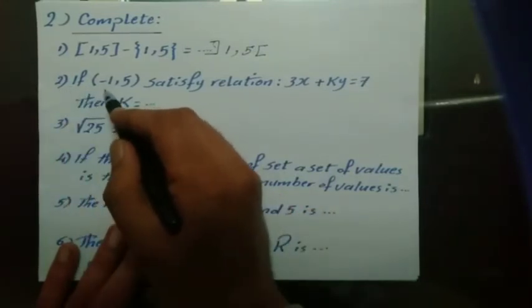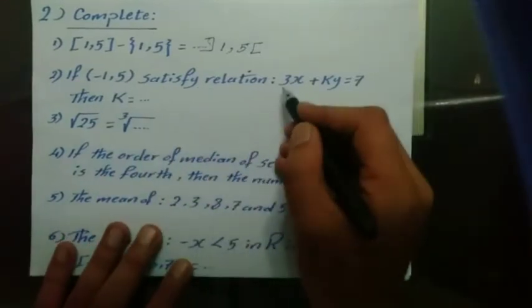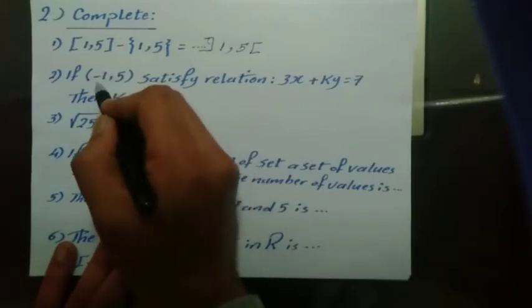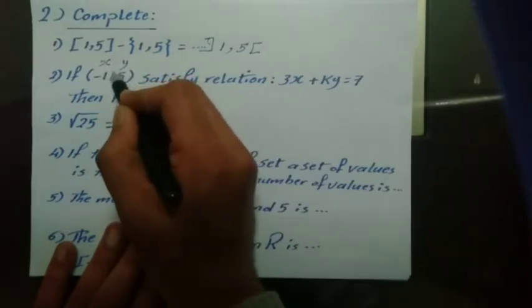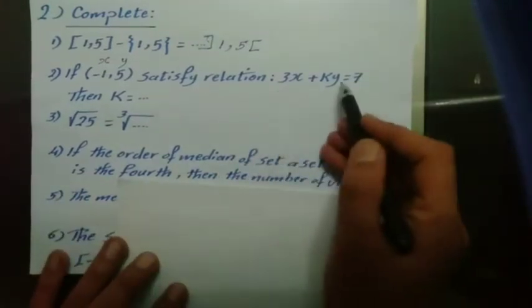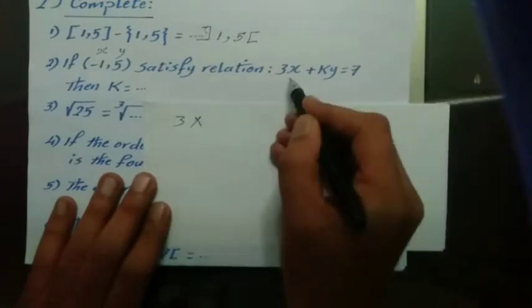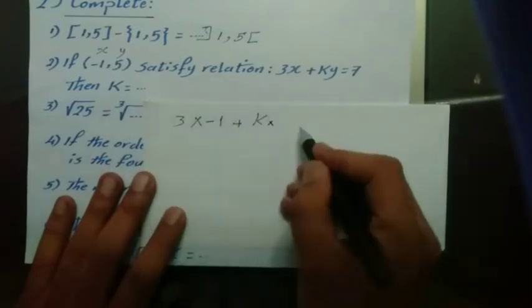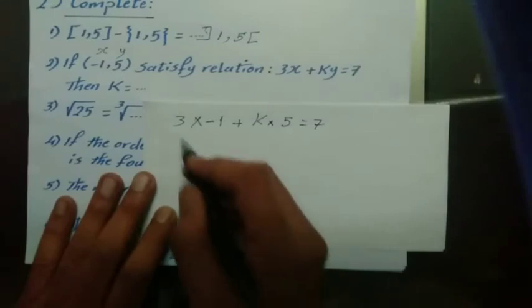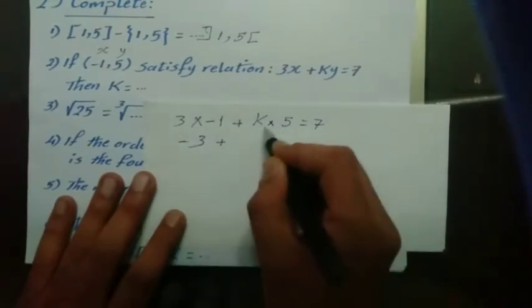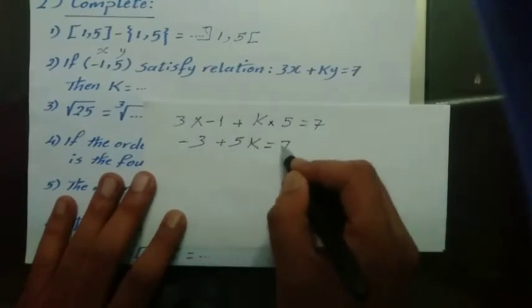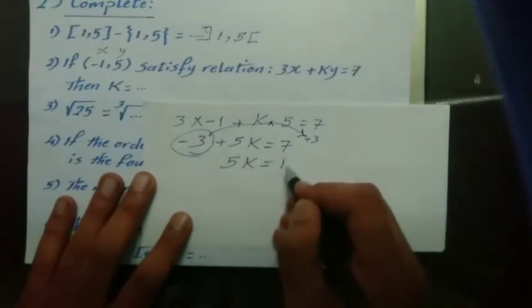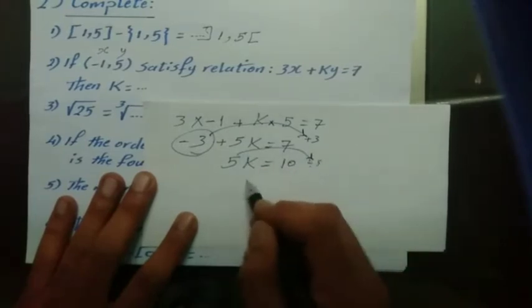Question: The point (negative 1, 5) satisfies the relation 3x plus ky equals 7. Find k. Substituting x equals negative 1 and y equals 5 into the equation: 3 times negative 1 plus k times 5 equals 7, giving negative 3 plus 5k equals 7. Moving negative 3 to the other side: 5k equals 10, so dividing by 5 gives k equals 2.